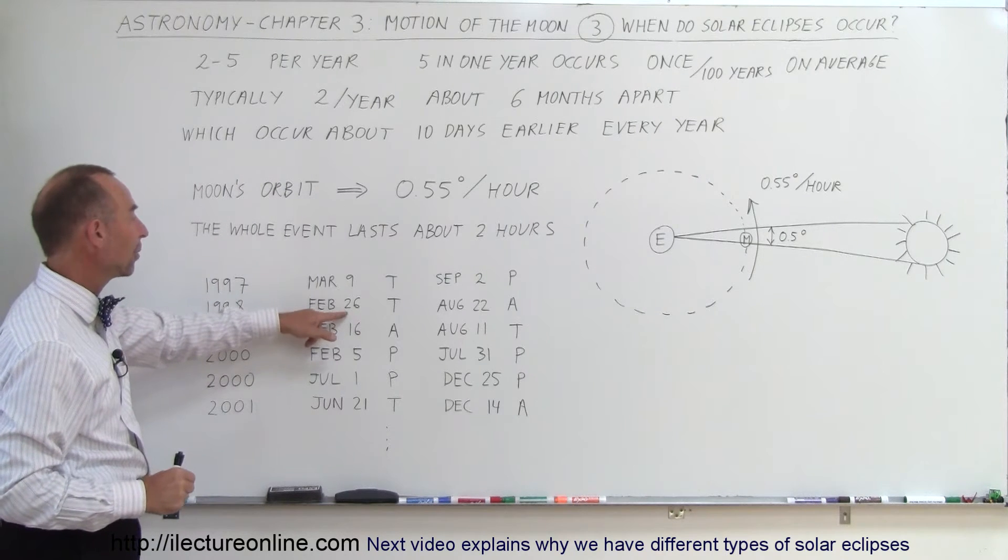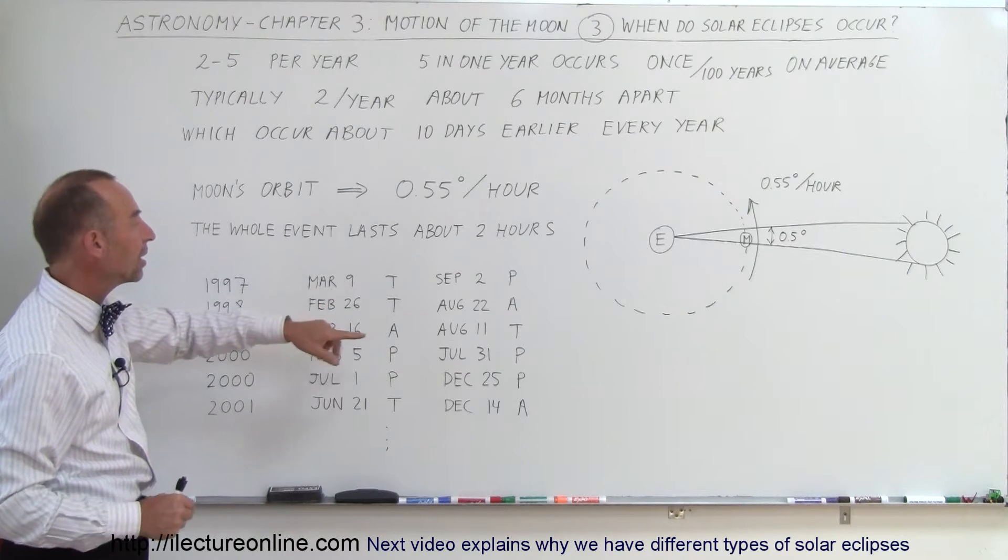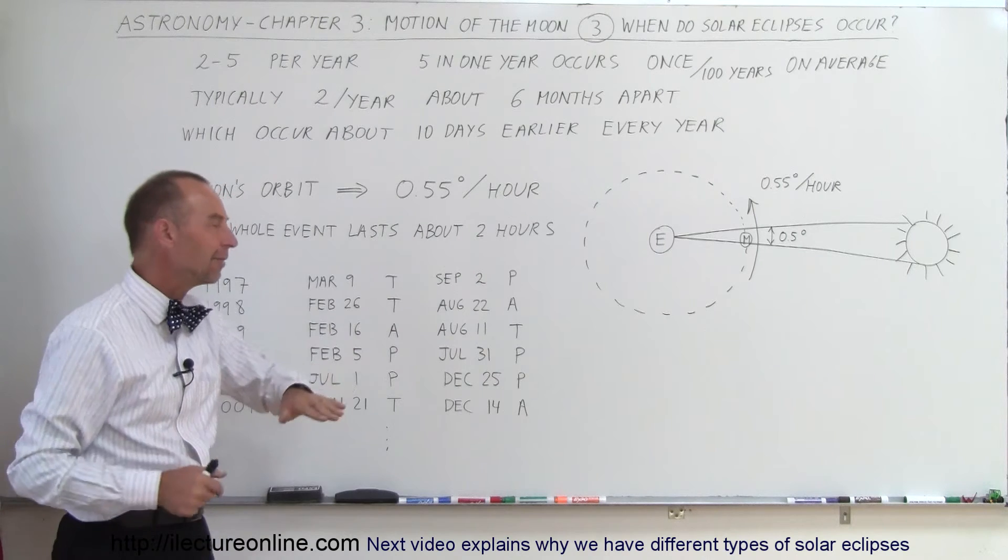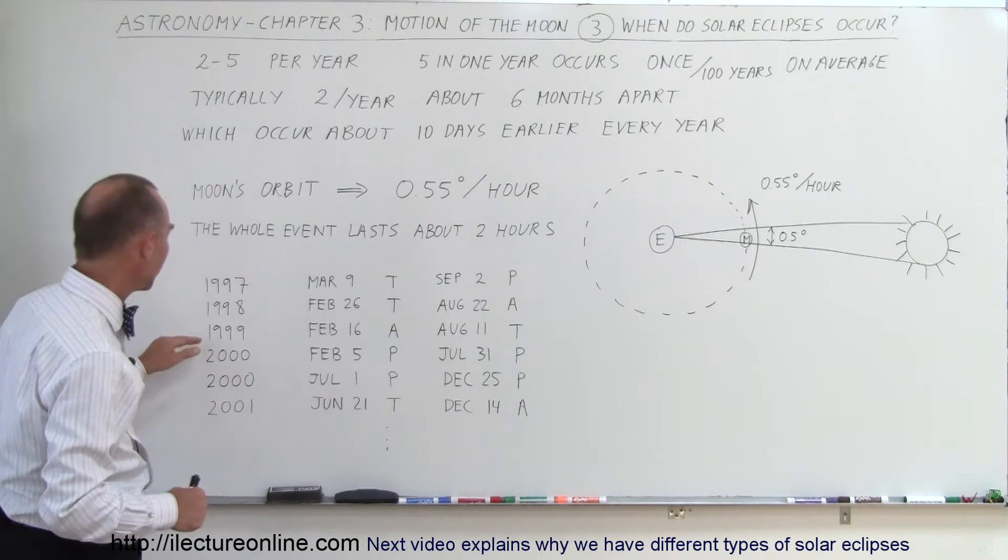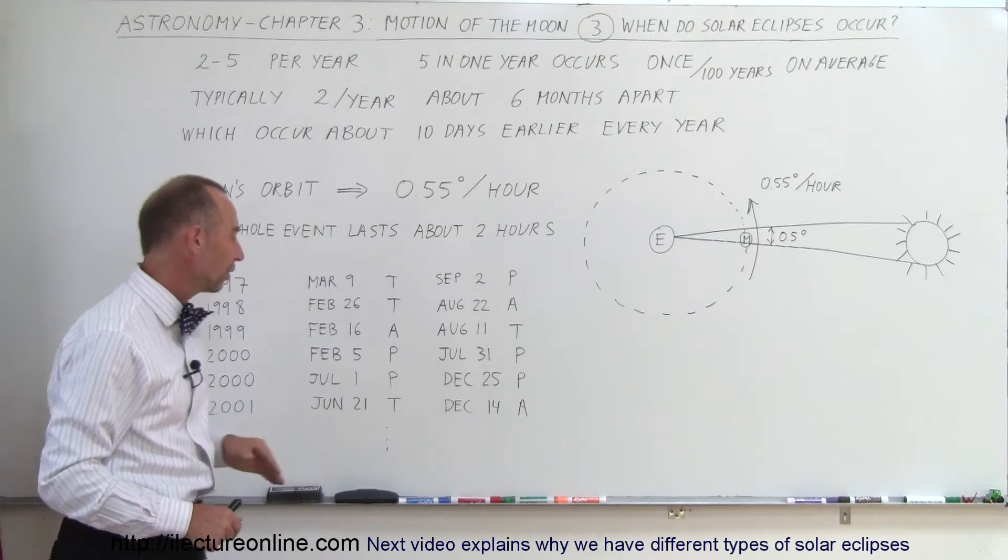In 1998, we had one on February 26th, which you can see is roughly ten days earlier in the year, and we had one on August 22nd, again roughly ten days, more like eleven days earlier. And then, the following year, 1999, February 16th, ten days earlier, August 11th, eleven days earlier.